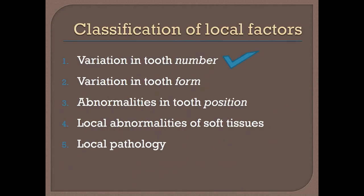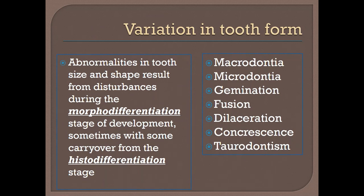Now we come to problems related to variation in tooth form, that is size or shape, which can result from disturbances during the stage of morpho-differentiation. Sometimes carryover from the histo-differentiation stage contributes. Examples include macrodontia, microdontia, gemination, fusion — what we call double teeth — as well as dilaceration, concrescence, and taurodontism.